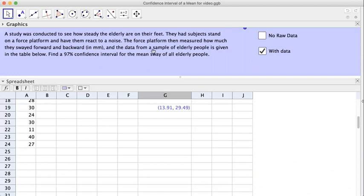And the data from a sample of elderly people is given in the table below, right here. Find the 97% confidence interval for the mean of all elderly people.